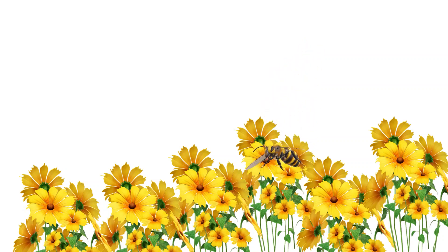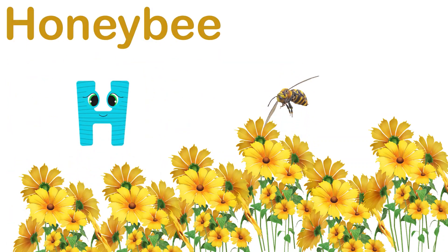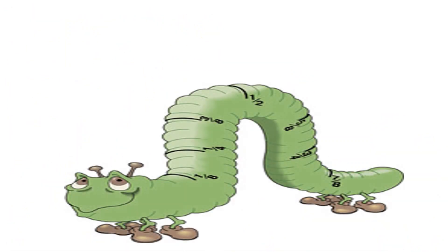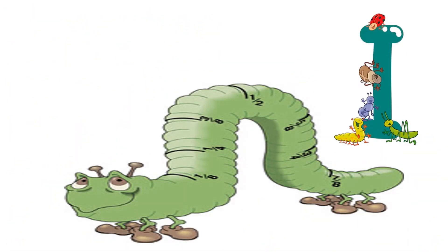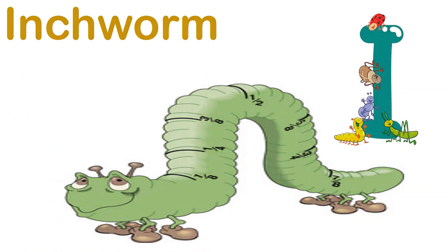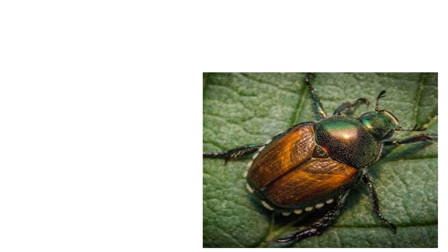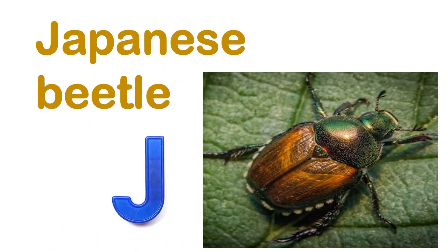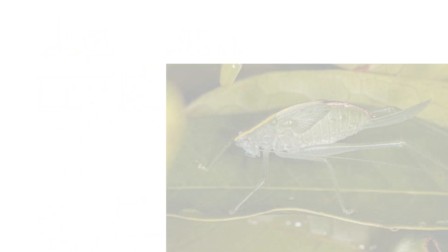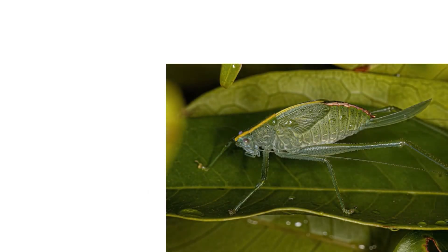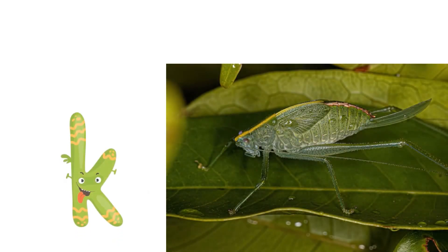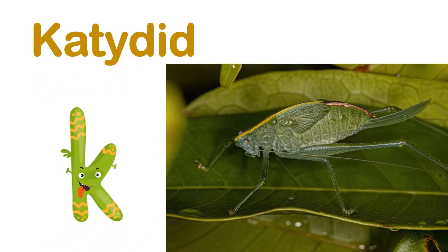H for Honey Bee. I for Inchworm. J for Japanese Beetle. K for Caterpillar.